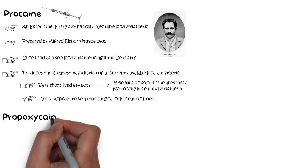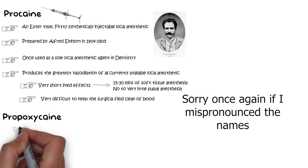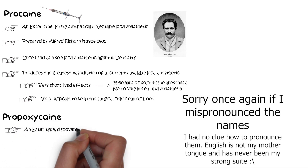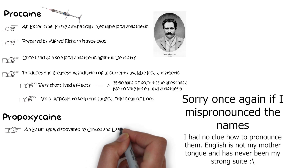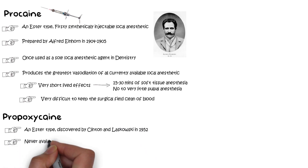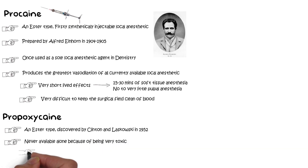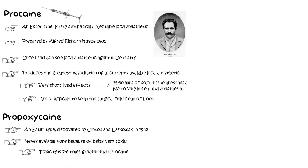Propoxicaine was also a synthetic agent discovered by two scientists, Clinton and Lasovski, in 1952. This agent was never available alone because of being very toxic. In fact, the toxicity of propoxicaine when compared with procaine is approximately seven to eight times greater, and hence it can never be used alone.